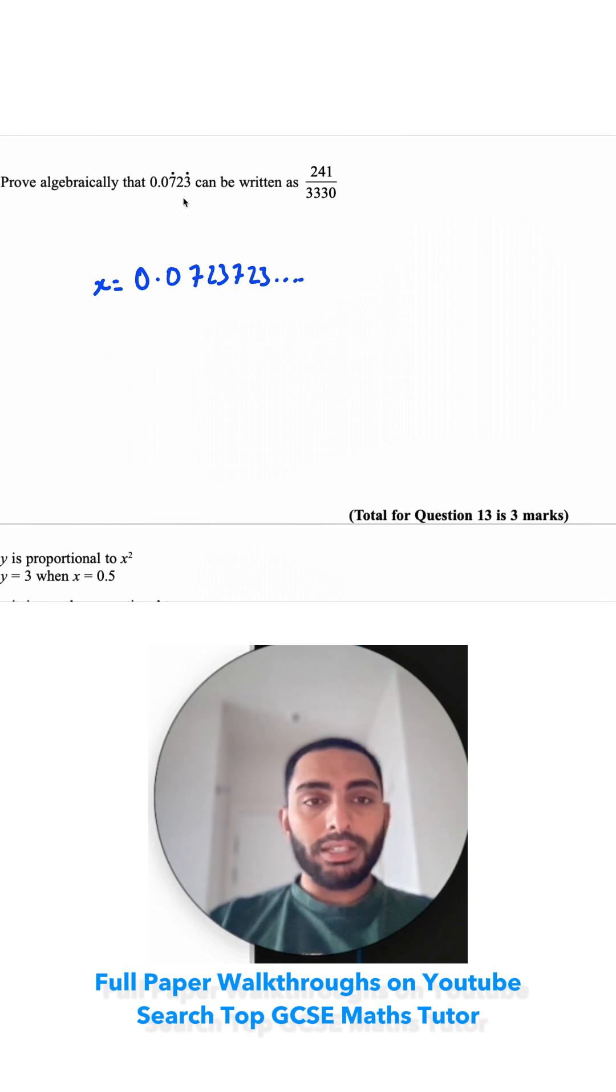Because there's three digits that are repeating, I'm going to multiply it by 1000. If there's one digit repeating, I multiply by 10. If it's 2, I multiply by 100.